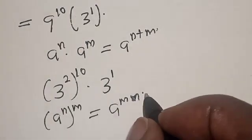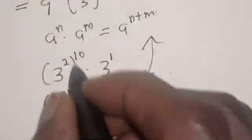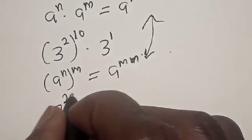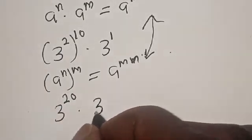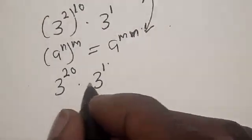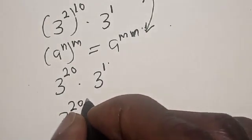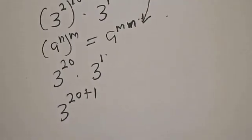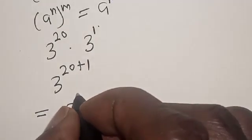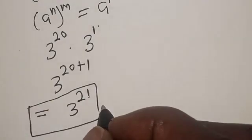Now let's make use of this rule. From here, we have 3 raised to power 10 times 2, which is 3 raised to power 20, multiplied by 3 raised to power 1. They have the same base — common base — so this is 3 raised to power 20 plus 1, which equals 3 raised to power 21. This is our final answer.